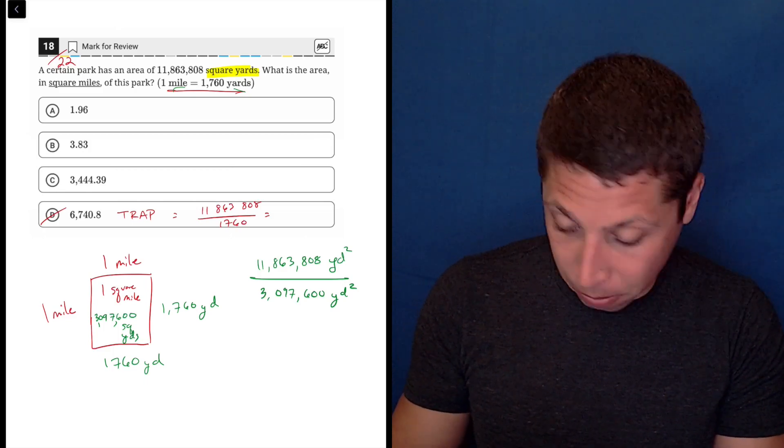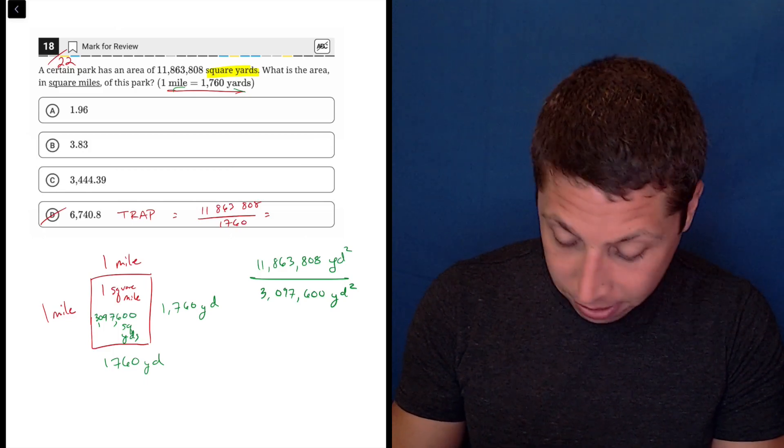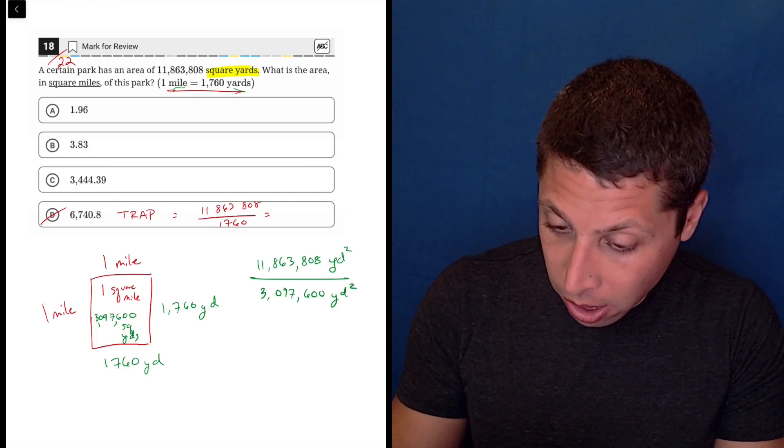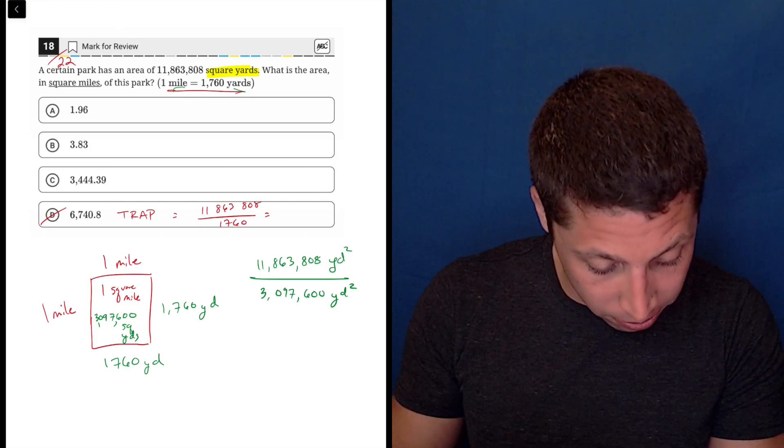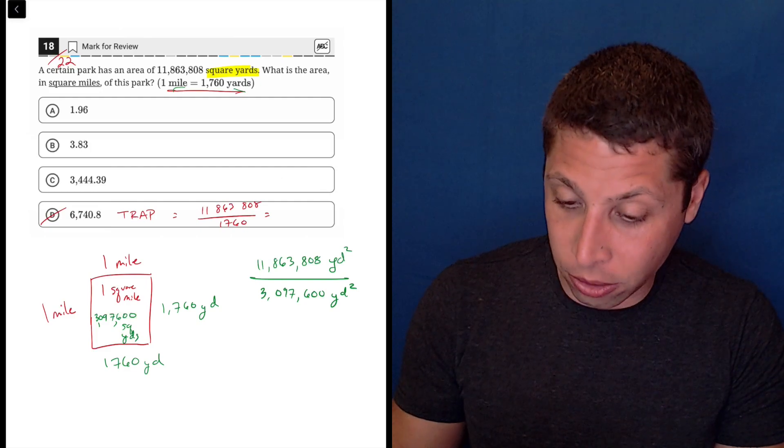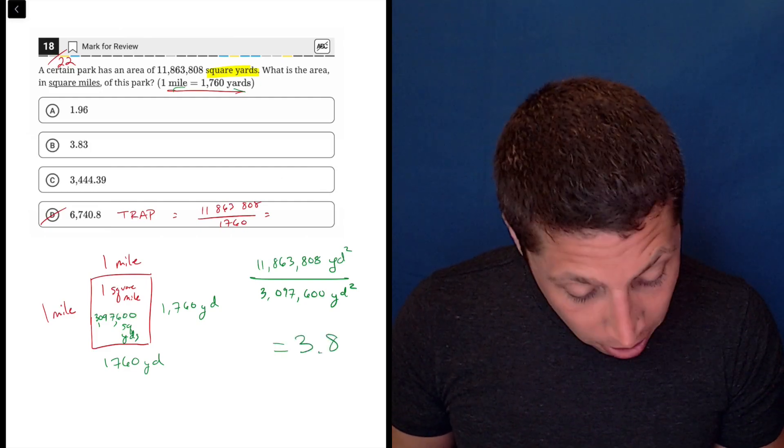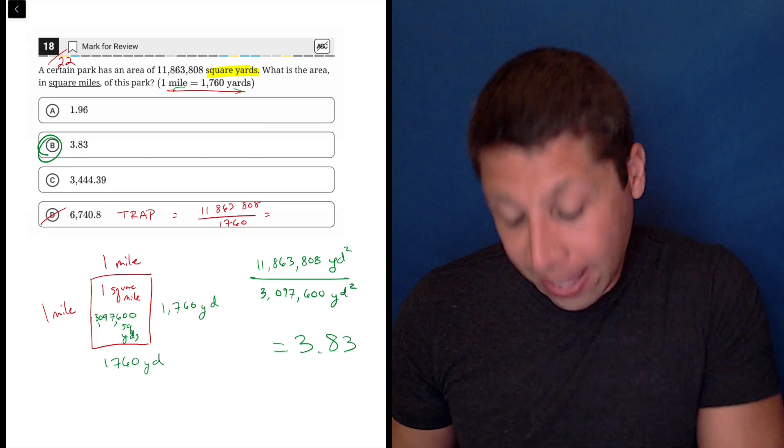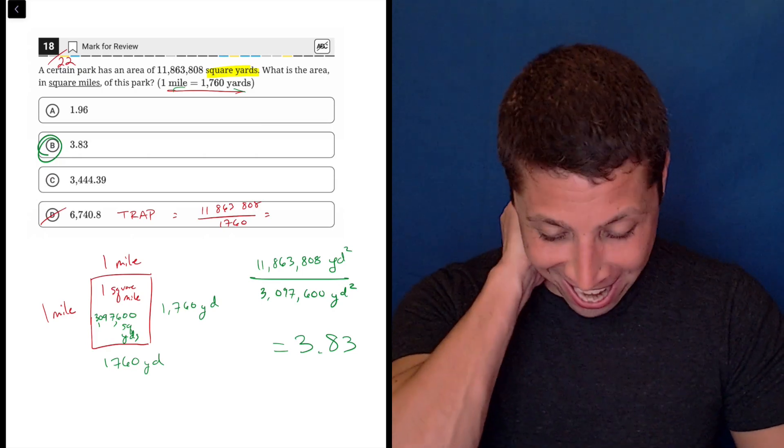So ugh, this is such big numbers. I'm so afraid of entering this wrong, 11,863,808 divided by 3,097,600 is 3.83. And that's an answer, and thankfully that is the answer.